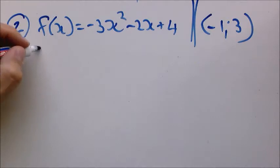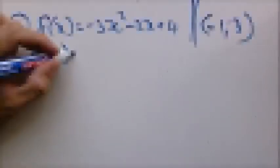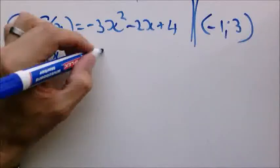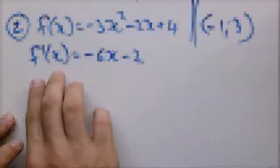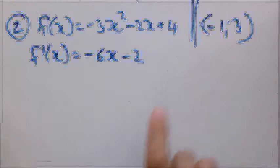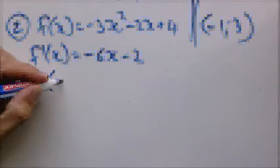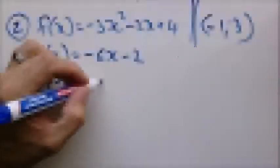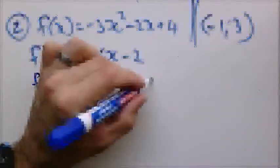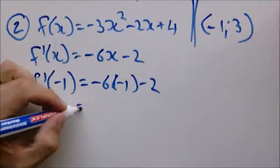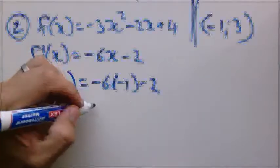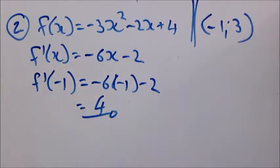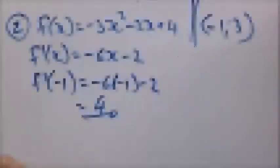How do we get it? We work with the derivative. So derivative becomes negative 6X minus 2. And we want the gradient at that point. So we just substitute X equals negative 1 into this equation. That will give us a positive 6. A positive 6 minus 2 is a positive 4. So there we have the gradient and the coordinate.